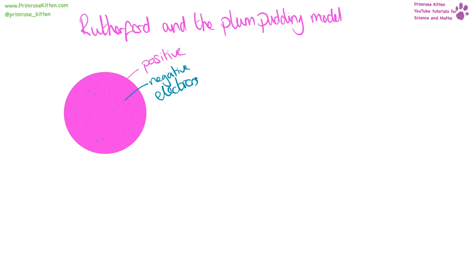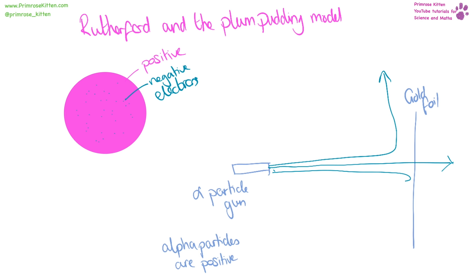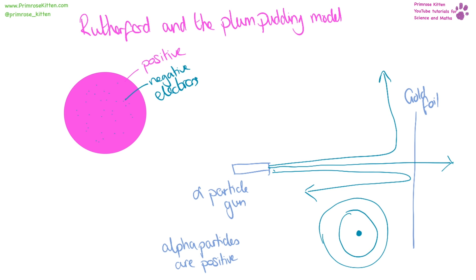Rutherford wanted to test the plum pudding model — a large positive blob with negative bits throughout. He took a sheet of gold foil and fired alpha particles at it. The majority went straight through, but very occasionally one would be deflected a little, and even more occasionally one would be deflected a lot. This told Rutherford there was a build-up of positive charge in the middle with negative charges around the outside, and that most of the atom was empty space, leading to the nuclear model.